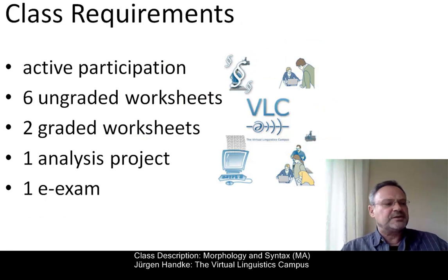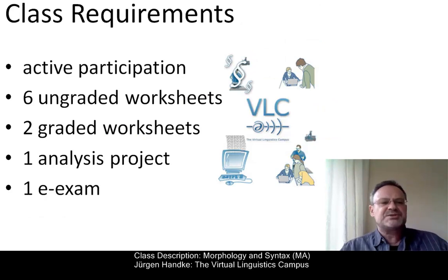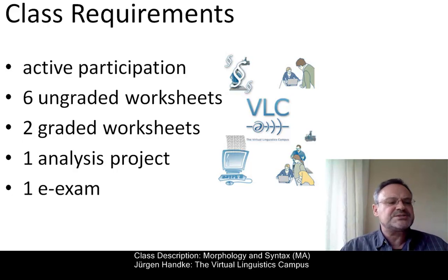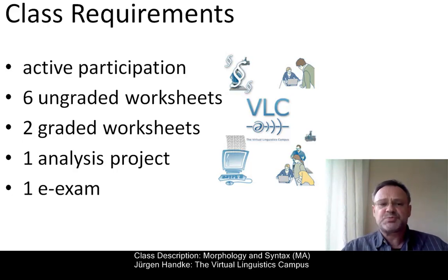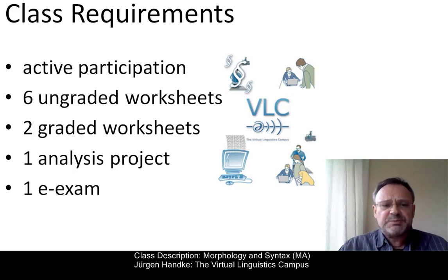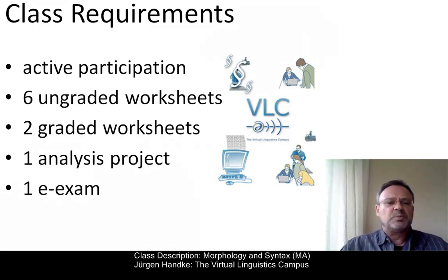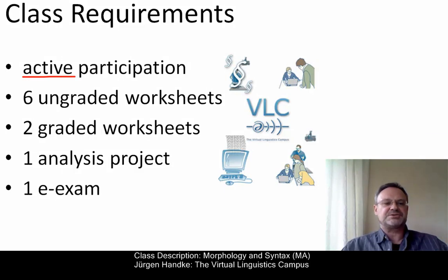Now, you want to know what you have to do in order to get the six class credits, where one credit is the equivalent of about 30 hours of workload. The credits will be awarded as follows. First of all, we want you to actively participate in our class activities.